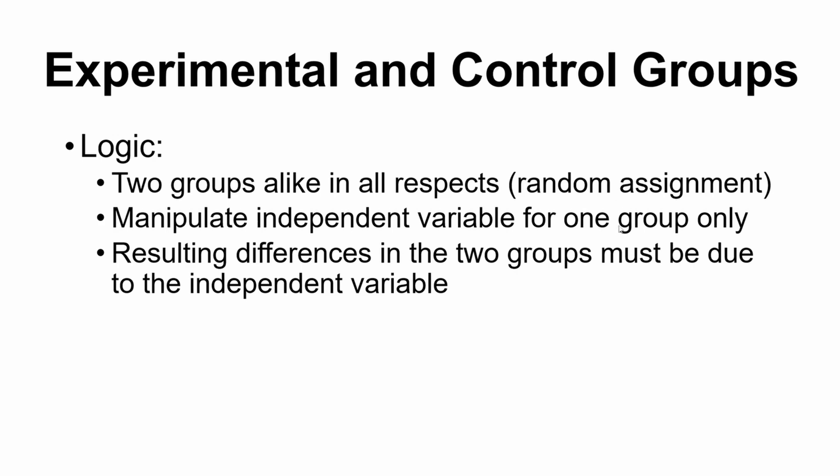We can then manipulate our independent variable for one group; the other group does not receive that treatment. The difference between the two groups, if they started out similarly, should be due only to that manipulation. So if both groups start with the same mood score, and one group receives the drug and the other doesn't, and the experimental group is happier at the end, we would say that increase in mood was due to the treatment they were given.